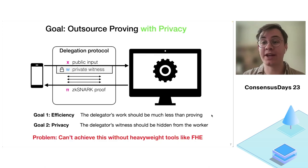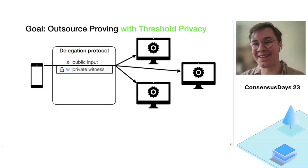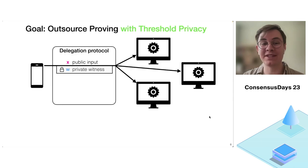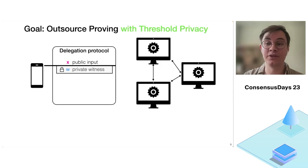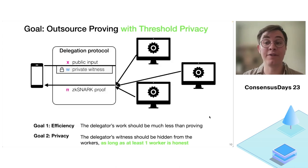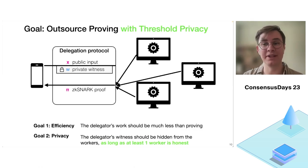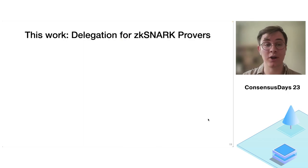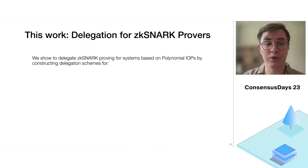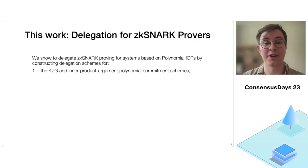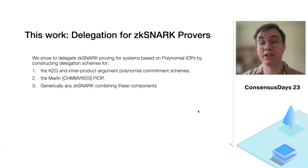To work towards practicality, we consider a relaxed setting with threshold privacy. In this setting, we send the witness to multiple workers who interact with each other and give back the proof. Our efficiency goal remains the same, but our privacy goal is slightly tweaked: the delegator's witness should be hidden from the workers as long as at least one worker is honest. This relaxed setting allows much more flexibility in our protocol. In particular, we show how to delegate ZK-SNARK proving for systems based on polynomial IOPs, and construct specific delegation schemes for the KZG and inner product argument polynomial commitment schemes and the Marlin PIOP.